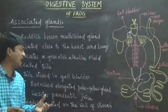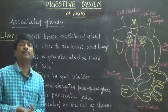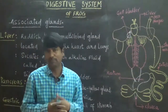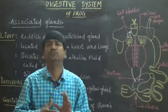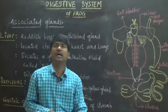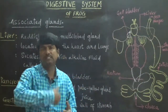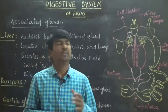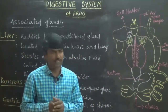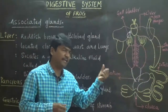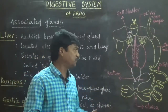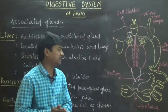The pancreas is a branched, elongated, pale yellow gland that generally produces pancreatic juice to digest food molecules. It is connected to the duodenum, and whenever food enters the duodenum, pancreatic juice is stimulated and enters the duodenum to digest the food molecules.